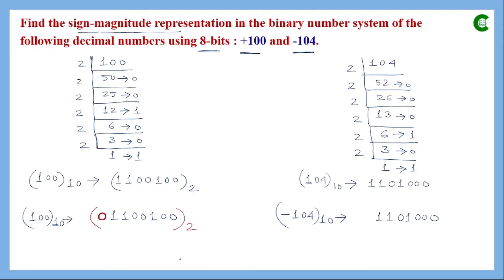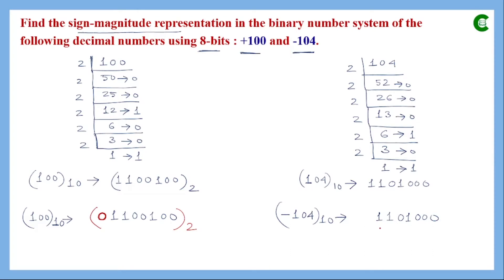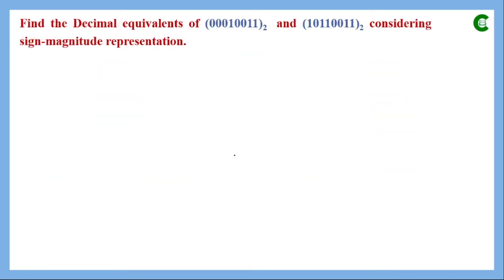For minus 104 in sign-magnitude representation, the first 7 bits (positions 0 to 6) represent the magnitude, and the 8th bit (MSB) represents the sign. Since this is a negative number, the MSB is 1. This gives us the complete sign-magnitude representation of minus 104.